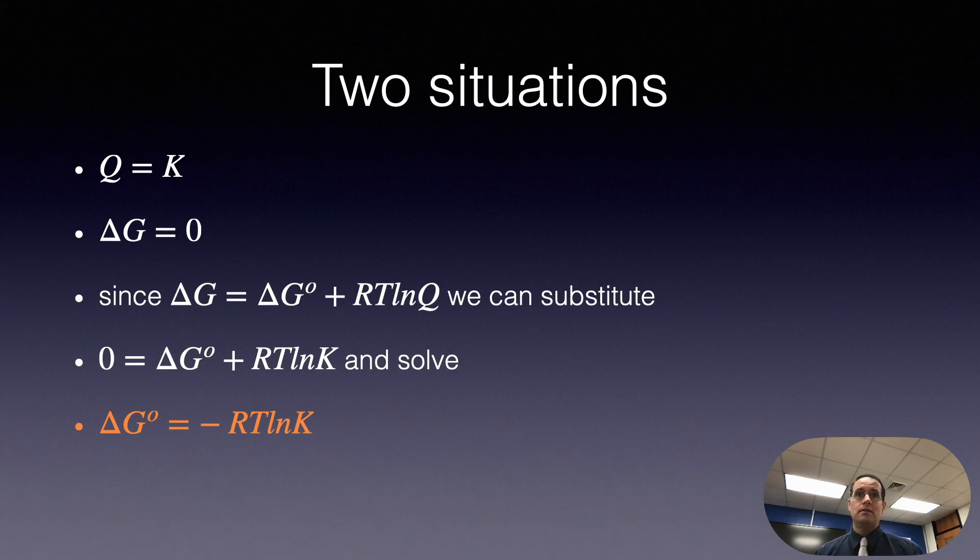Say I gave you the equilibrium constant is 3.8 times 10 to the minus 5. What's ΔG? You could just slap it into this formula and get an answer. Or, very importantly, you can solve for K. K, remember, is the equilibrium constant, and that's equal to a function of the Gibbs free energy.